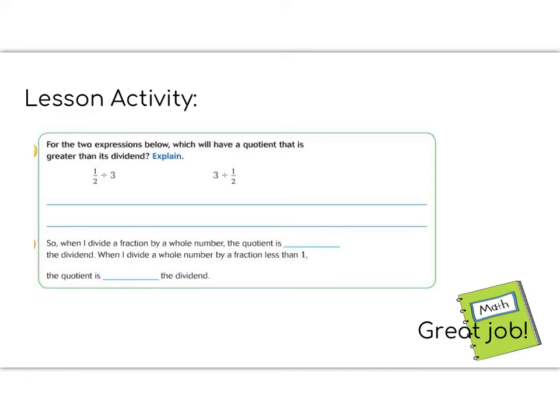let's show keep, change, flip. So we keep one-half, we change, and then we flip the three, which would be one-third. So this would give me one-sixth. On the other hand, if I have three things, and I divide it into half, that would be three times two over one, which would give me six. So which one has a greater answer? Well, I know that six is greater than one-sixth.